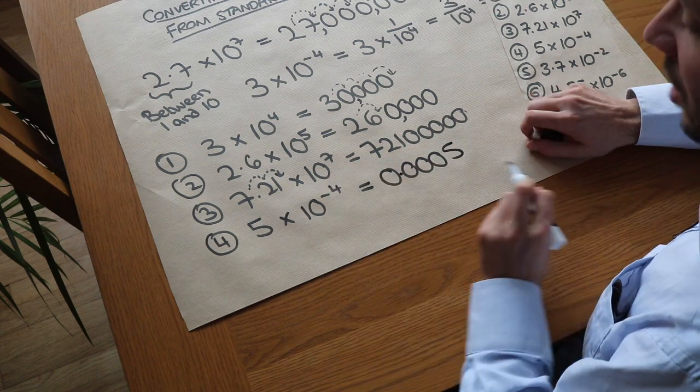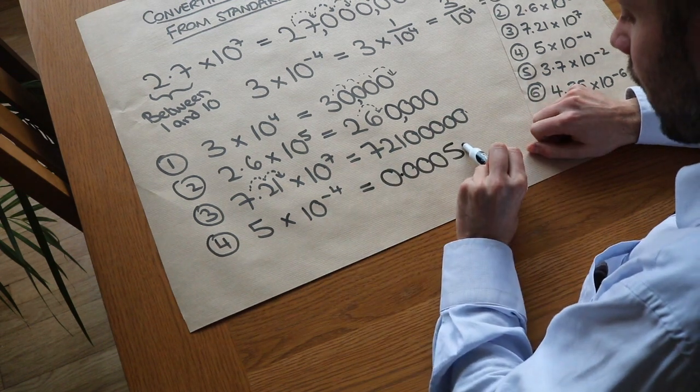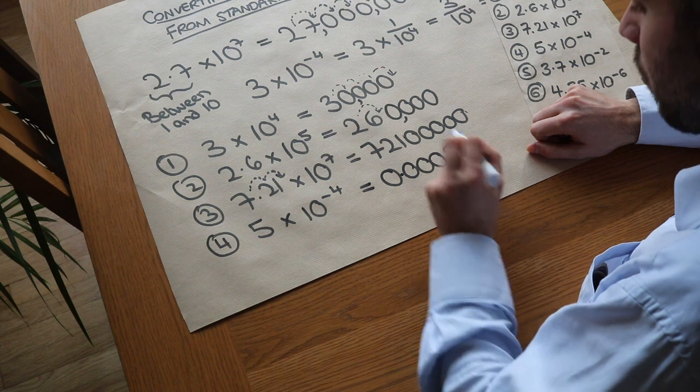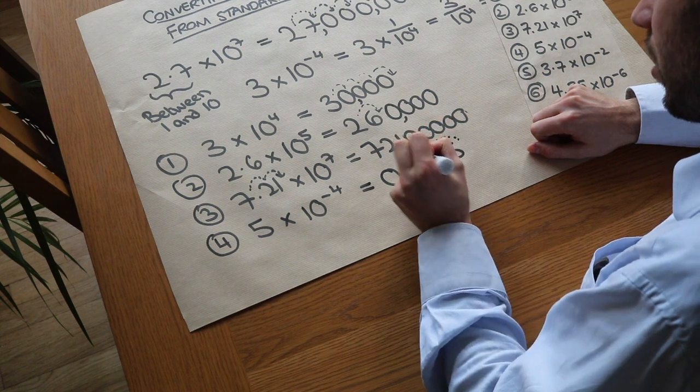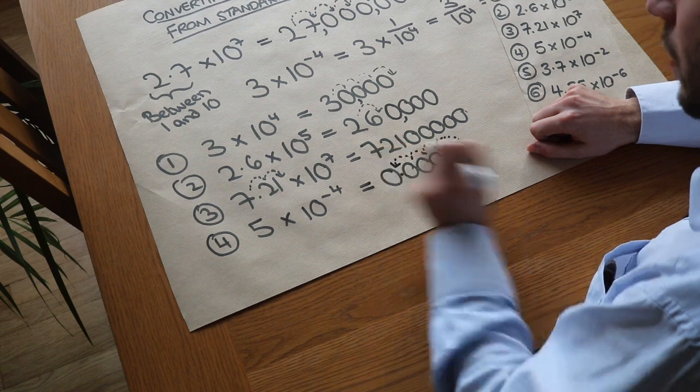So we have zero, zero, zero, zero, four times, and then a 5, and we put the decimal point there. And we can just check: if we have 5 and the decimal point after it and we move the decimal point four times, one, two, three, four. That's correct.